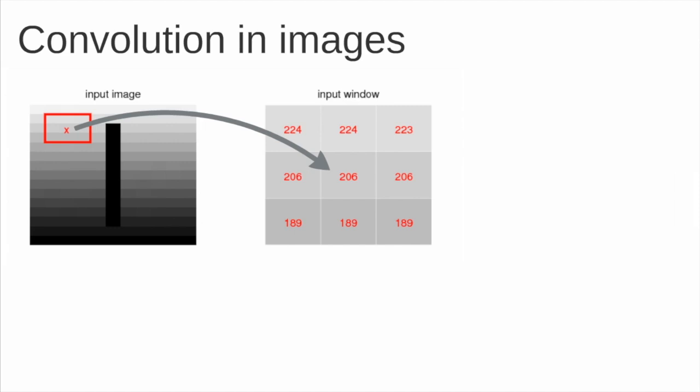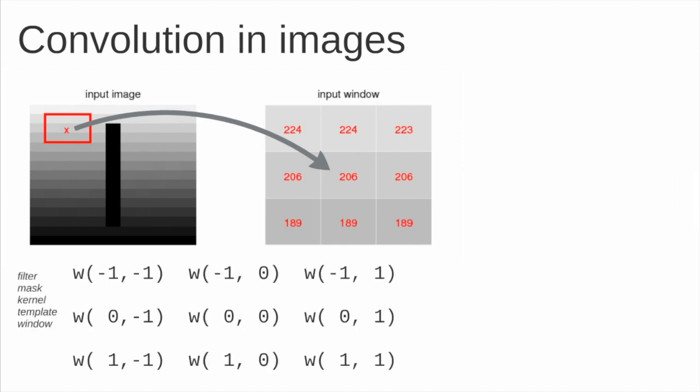The other concept that I mentioned is the convolutional operation. We have a single input image and we apply some filter, which can be called mask, kernel, template or even window. By applying this we can see that this red square is represented in this input window. All these values are pixels of the image in that position.